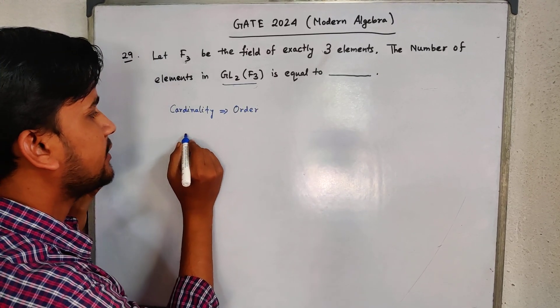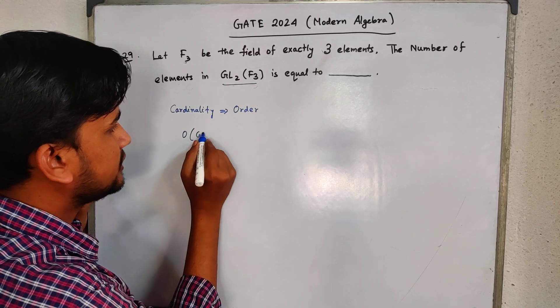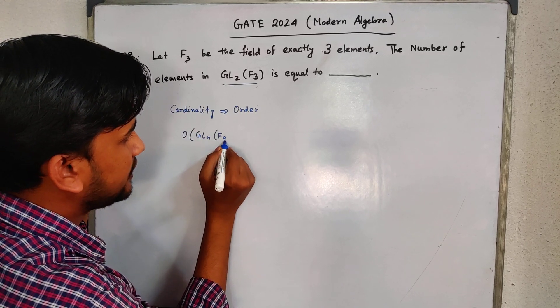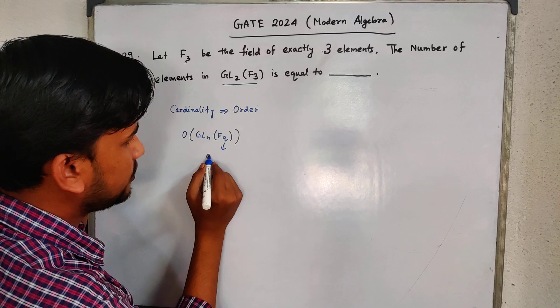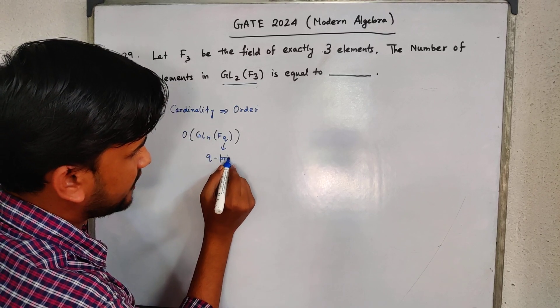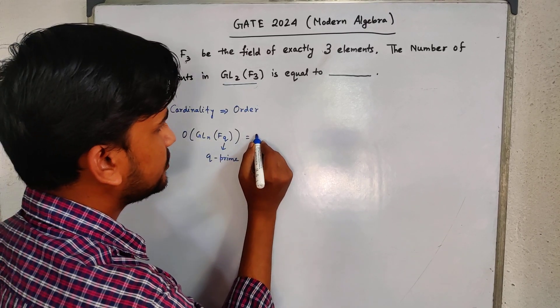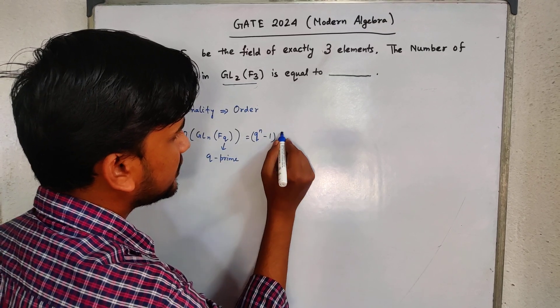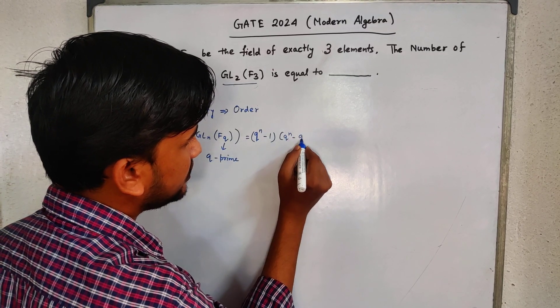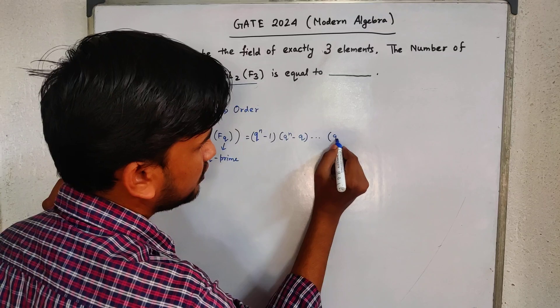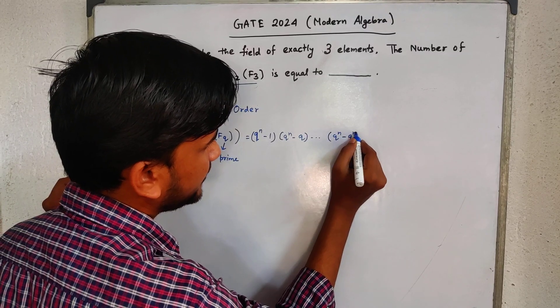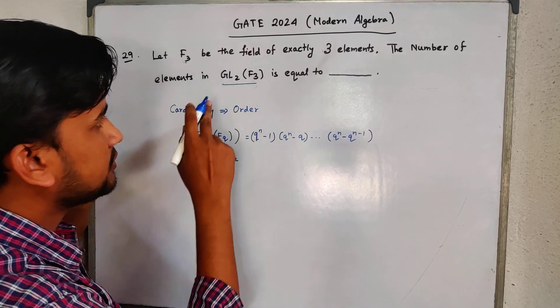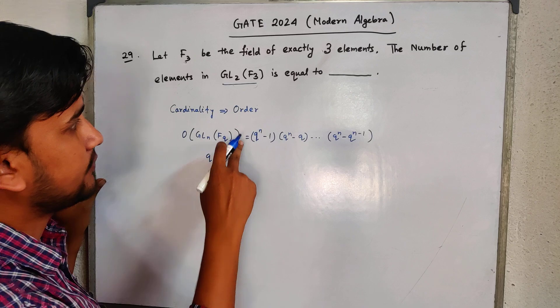The formula is: order of GL(n, Q), if Q is prime, then this is equal to Q to the power (n-1), times (Q to the power n minus Q), and so on, Q to the power n minus Q to the power (n-1). You have to just write the values instead of Q and n.